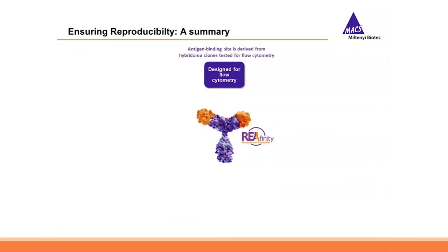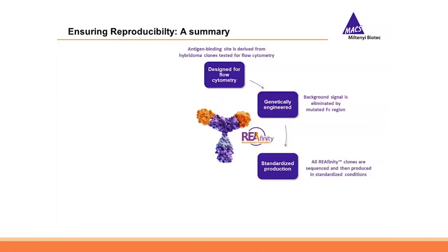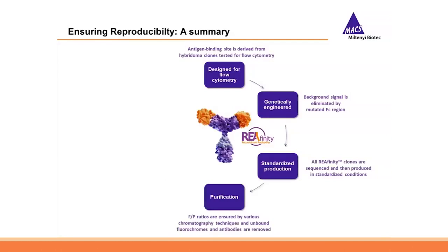To summarize how our recombinant antibodies ensure reproducibility: they are designed especially for flow analysis; they are genetically engineered with a mutated Fc region to eliminate background signal; they are defined by their DNA sequence and produced under standardized conditions; the antibody product is purified by state-of-the-art techniques to ensure lot-to-lot consistency; lot-to-lot consistency is tested in our quality department; and an extended antibody validation program has been started with results available to customers.